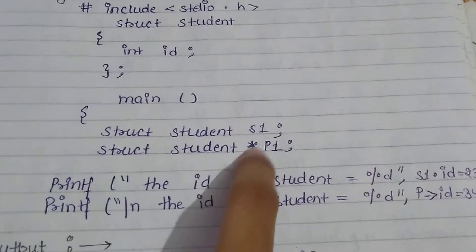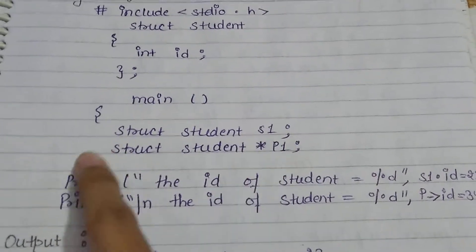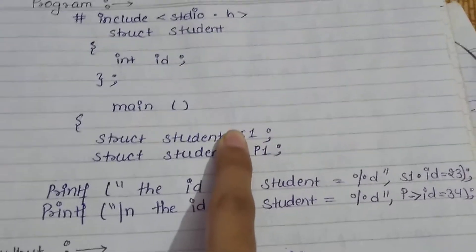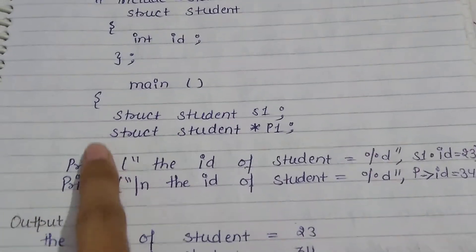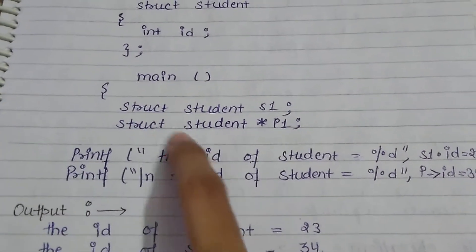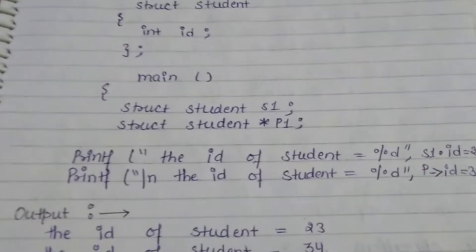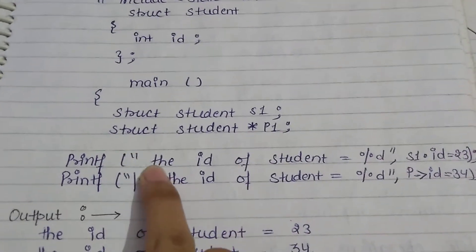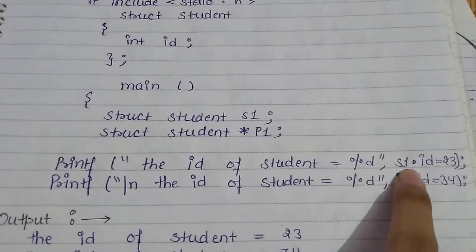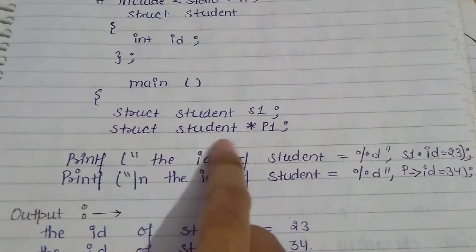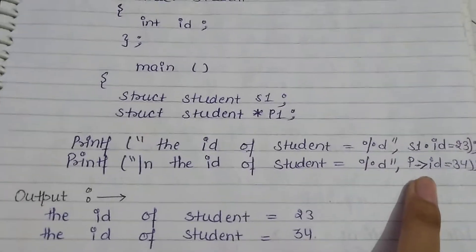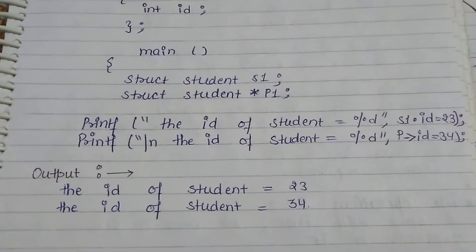In this structure we have one variable s1 and another one is a pointer which will store the address of s1. So we have one normal structure variable s1 and one pointer variable. For the normal structure variable we use the dot operator to access members, and for the pointer variable we use the arrow symbol. We then print the output values for both.